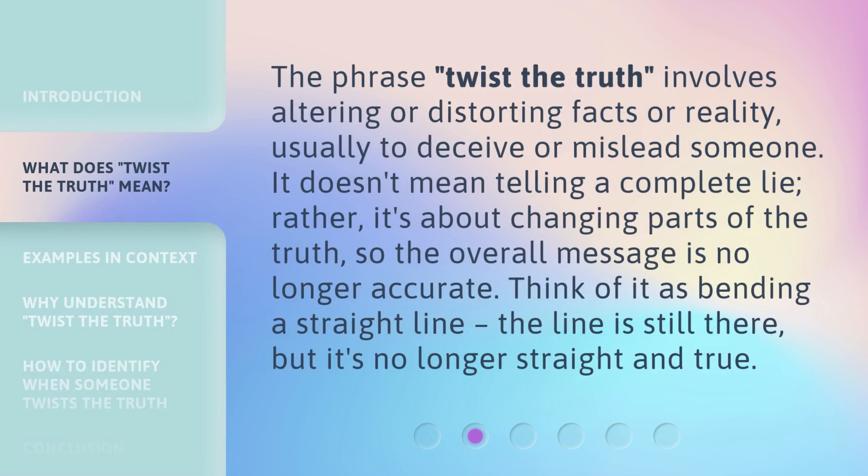The phrase Twist the Truth involves altering or distorting facts or reality, usually to deceive or mislead someone. It doesn't mean telling a complete lie. Rather, it's about changing parts of the truth so the overall message is no longer accurate. Think of it as bending a straight line — the line is still there, but it's no longer straight and true.